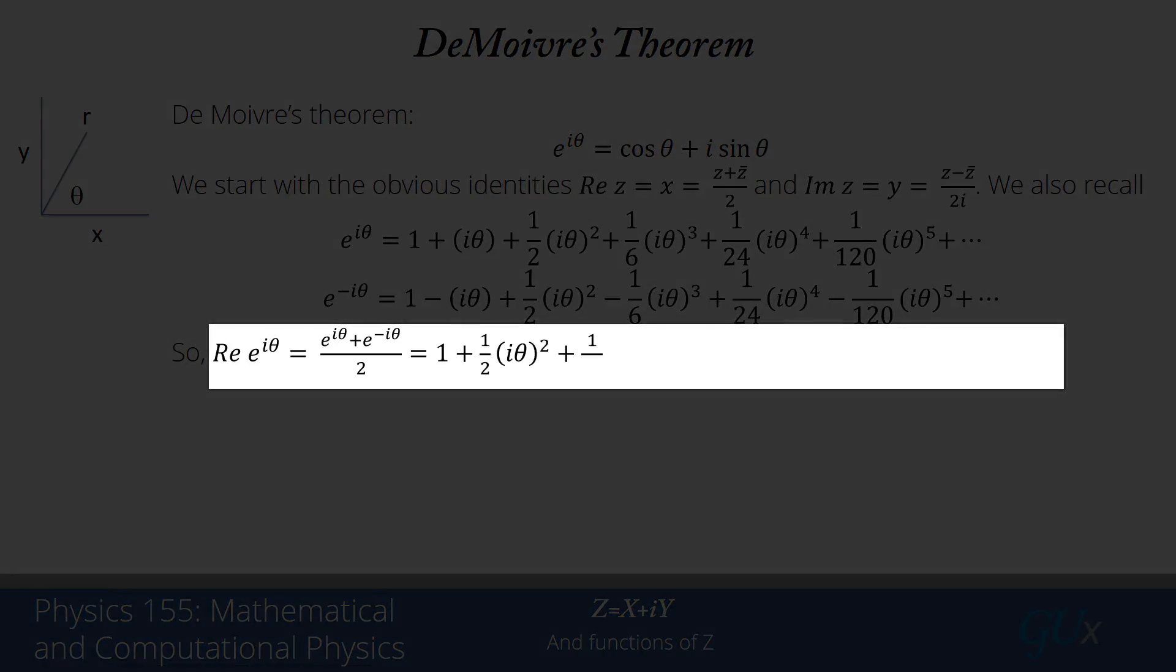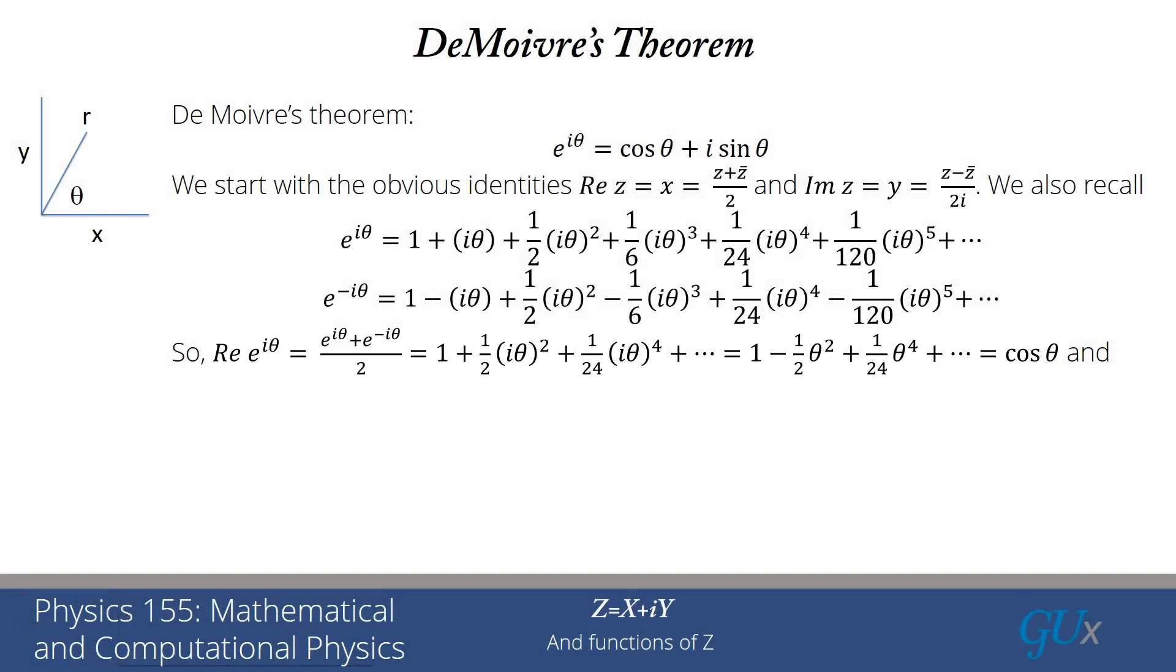If z equals e to the i theta, the real part is z plus z bar divided by 2, which is e to the i theta plus e to the minus i theta divided by 2. All the odd terms cancel, leaving just the even terms. I get 1 minus 1 half theta squared plus 1 over 24 theta to the fourth and so on. We immediately recognize that is the Taylor series expansion for cosine theta. This also gives us the identity that cosine theta is e to the i theta plus e to the minus i theta over 2. Here we can see explicitly how the proof comes about.